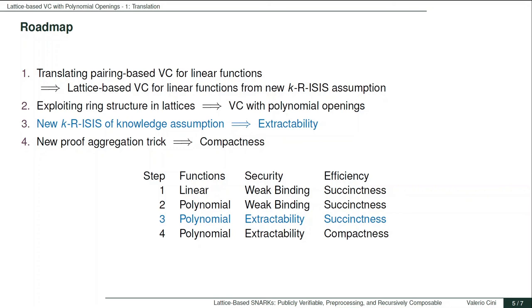The only property left to upgrade is now succinctness. We achieve this by introducing an aggregation trick that involves embedding a ring SIS instance in the public parameters. In this way, we obtain a VC scheme that satisfies all the properties required and that can be compiled into a SNARK.